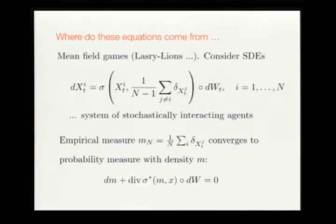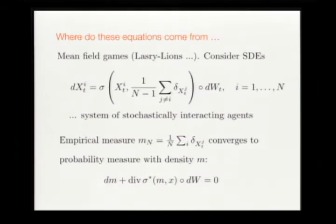Imagine a system of many agents interacting through a nonlinear function sigma in a Stratonovich SDE, where the equation for agent i also depends on the mean field of the remaining agents. Taking this as a starting point, looking at many interacting agents, computing the empirical measure, and sending the number of agents to infinity gives — formally in the limit — stochastic conservation laws with a rough flux. This motivates this kind of noise.